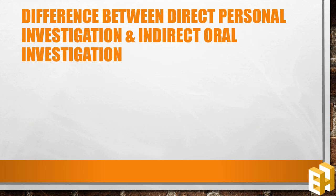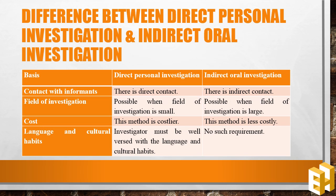There is a thin line between the two methods, so it is important to study the differences between them. Firstly, in direct personal investigation the investigator is in direct contact with the informants, whereas in indirect oral investigation, information is collected from a third person known as a witness. Secondly, direct personal investigation is useful when the field of investigation is small, while indirect oral investigation is used for a large field. Thirdly, direct personal investigation is costlier. Lastly, the investigator must be well versed with the culture and languages, whereas no such quality is required under indirect oral investigation.